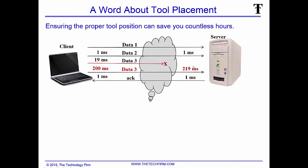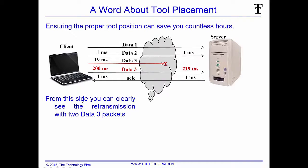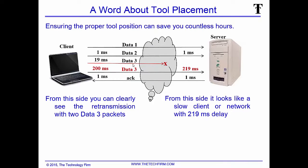Finally the server sends back an acknowledgement. The point here is from the client side you can clearly see there's a retransmission — two of those data packet three packets. But when you look at it from the server side, there was no retransmission, because the server received packet one, packet two, a big delay, and then packet three.